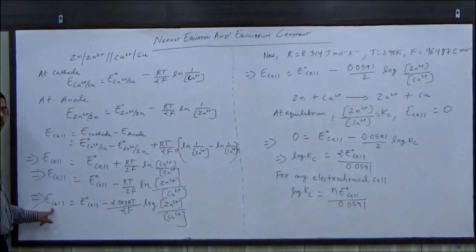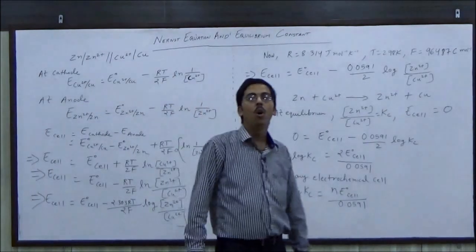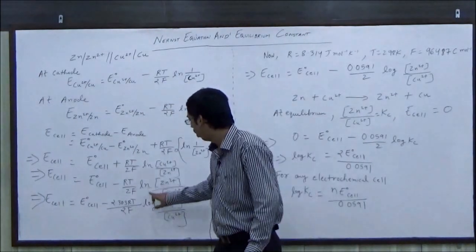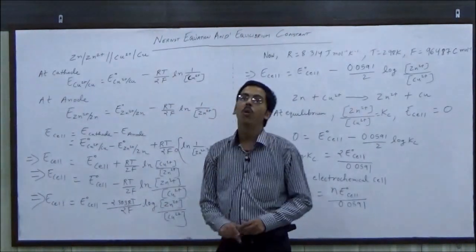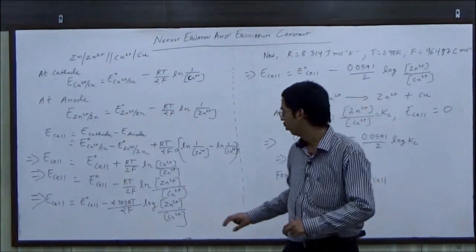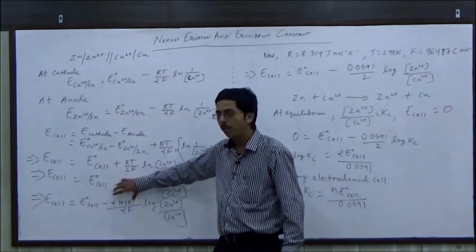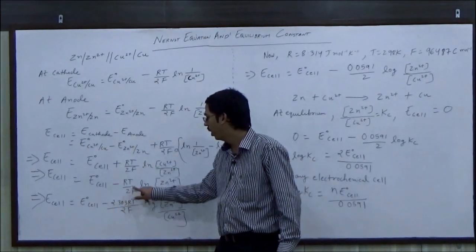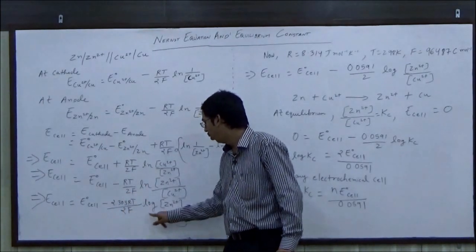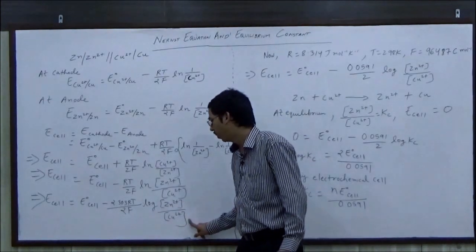Now once again, E cell is equal to E0 cell. Here we have converted ln which is in e base to log which is in base 10, because our log table has been made on base 10. So to convert log e base to log 10 base, we multiply by the number 2.303 RT by 2F log concentration of Zn2+ upon concentration of Cu2+.